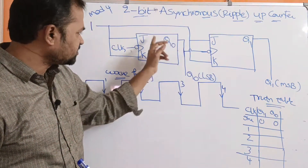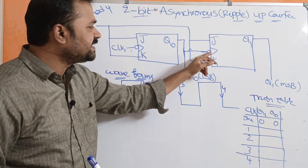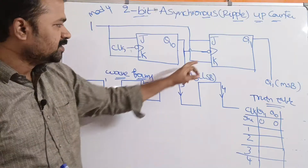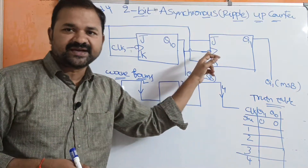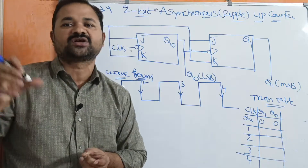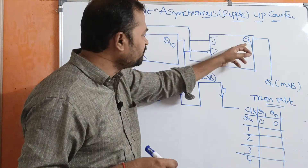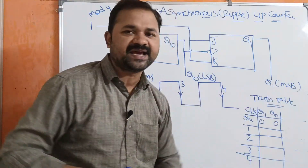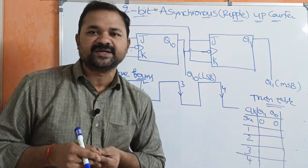Q0 is connected as the clock pulse to the second flip-flop. Here also we have a bubble, which specifies it is a negative edge clock pulse. The output of this second flip-flop is Q1, which acts as the MSB — most significant bit.